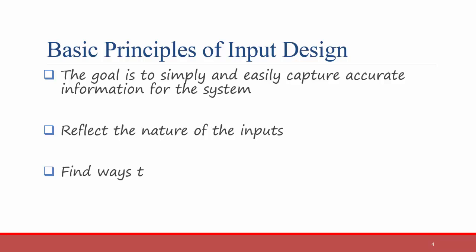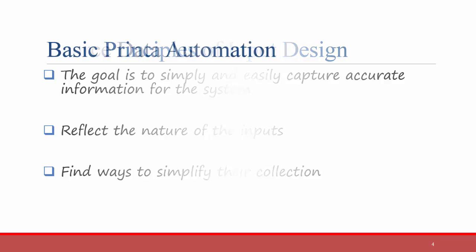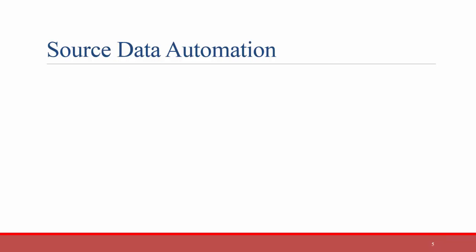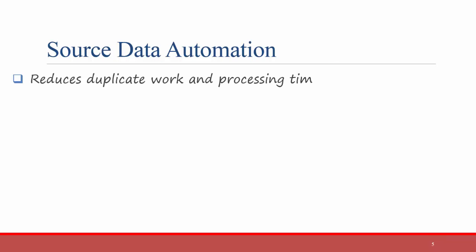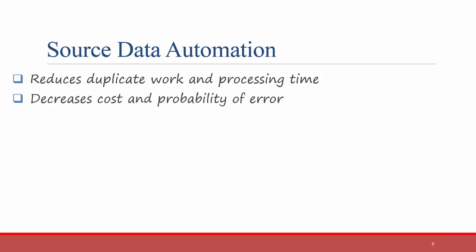Further, you should find ways to simplify the collection of data. One way to simplify data input is to use source data automation. Source data automation reduces duplicate work and processing time, and it decreases cost and the probability of error. In other words, if you need to gather a lot of information from the user, don't necessarily always rely on them typing in a lot of information.